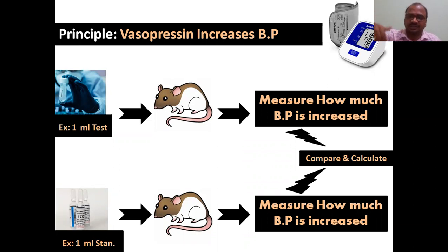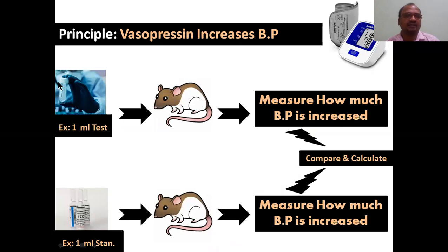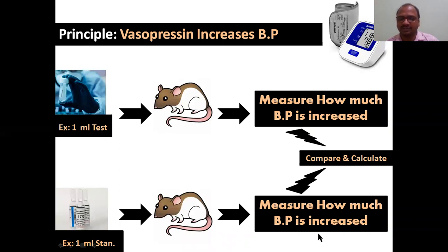The procedure involves steps like taking and cutting — everything will be there in the procedure — but the main thing is the principle part. You want to do the bioassay for your test preparation to determine its potency. You take the international standard, compare by giving injections to rats, measure how much BP is increased for both standard and test, and calculate the potency. It's better to take 1 ml of the test and 1 ml of the standard for easy comparison.